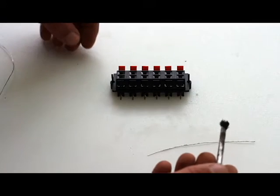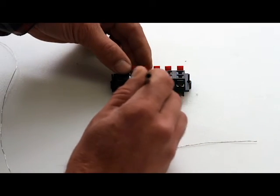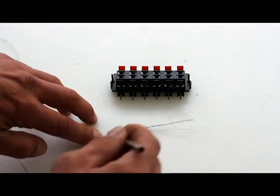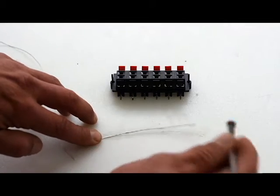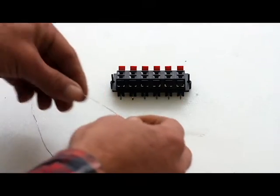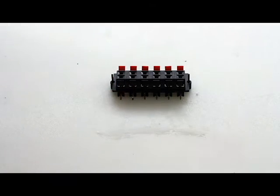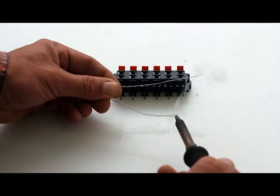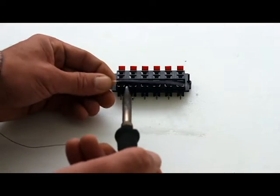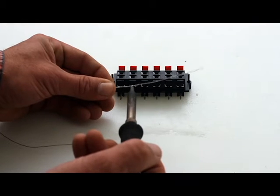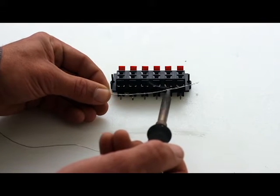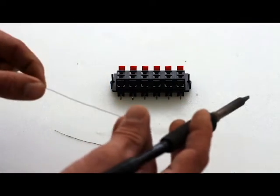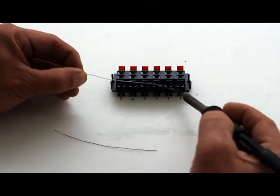First, we will apply flux to our solder terminals and wire. Then, tin your wire. Now, we can add solder to our terminals.